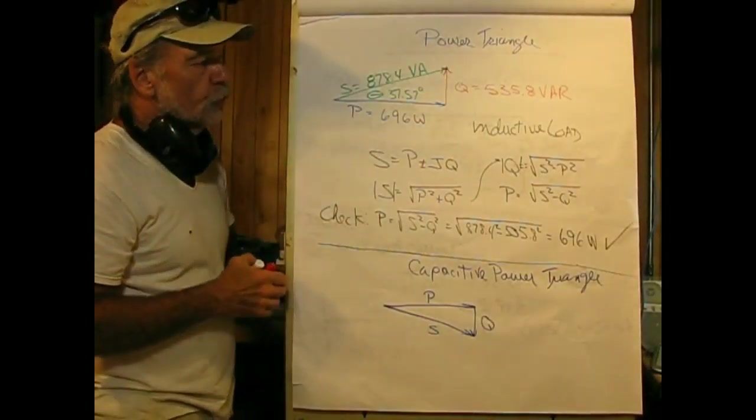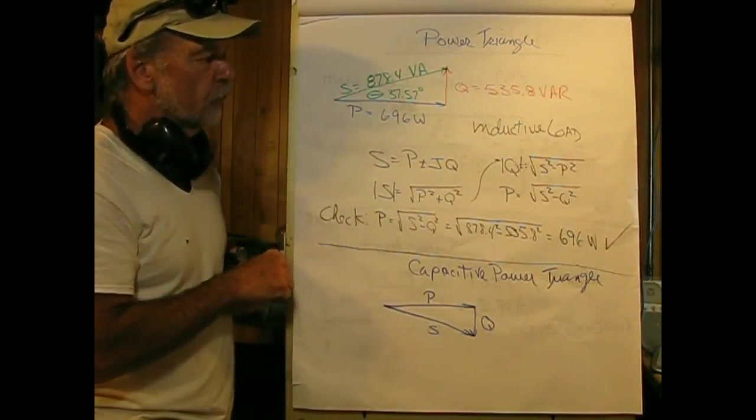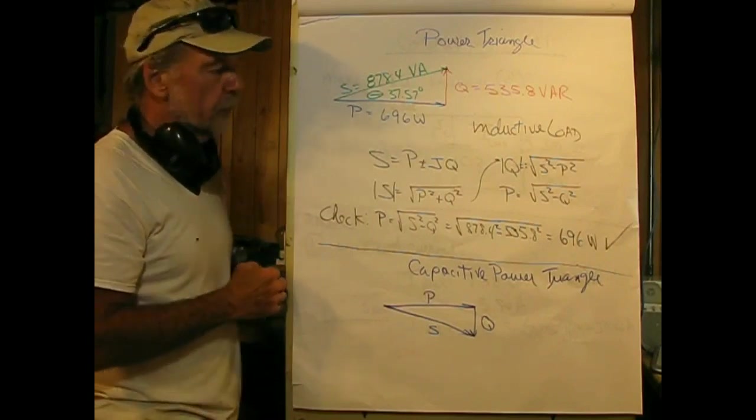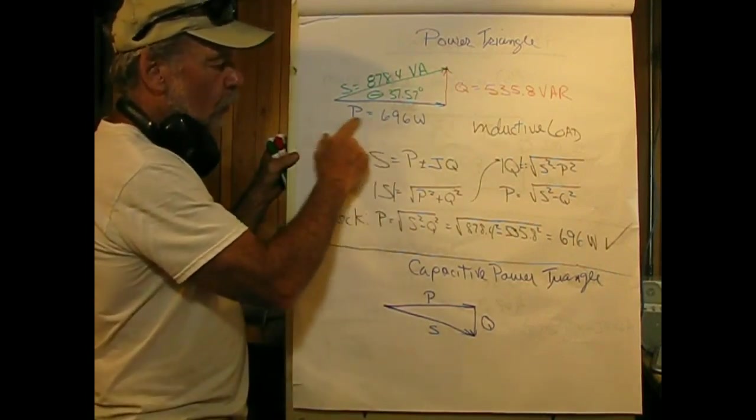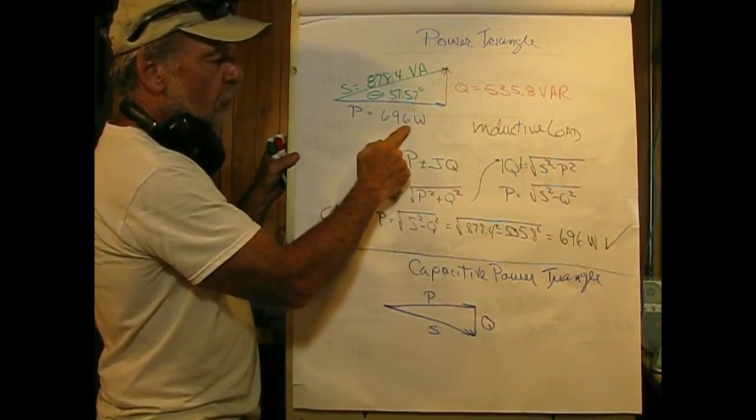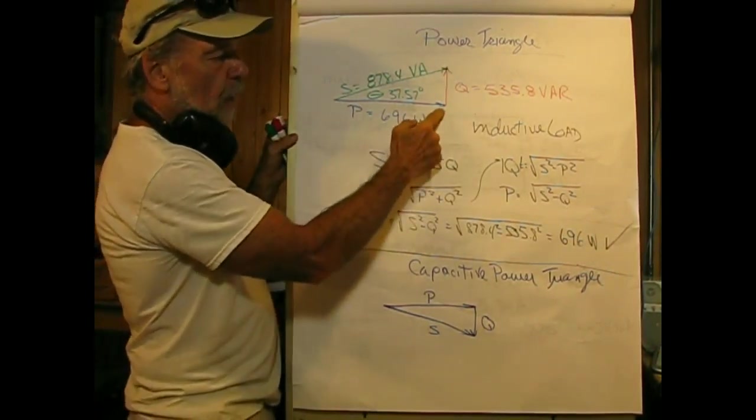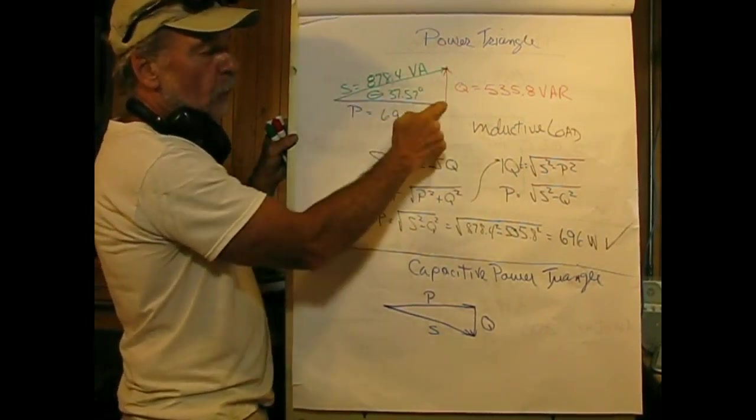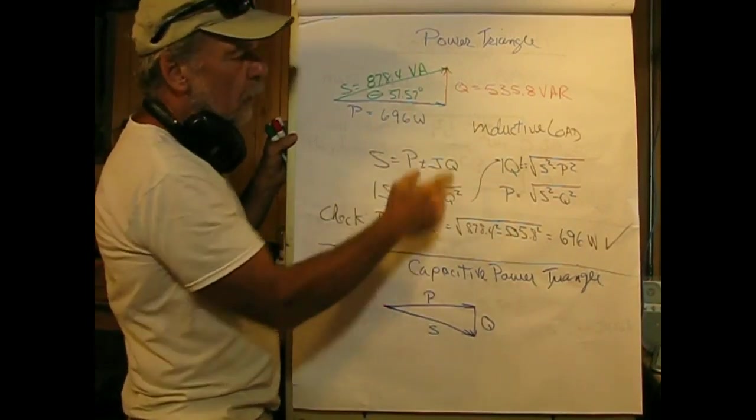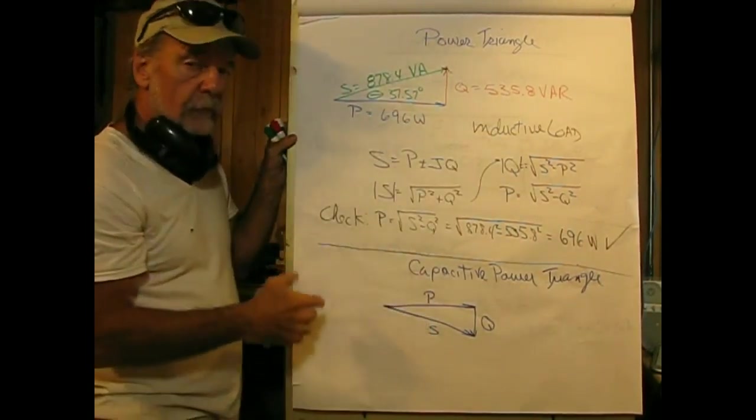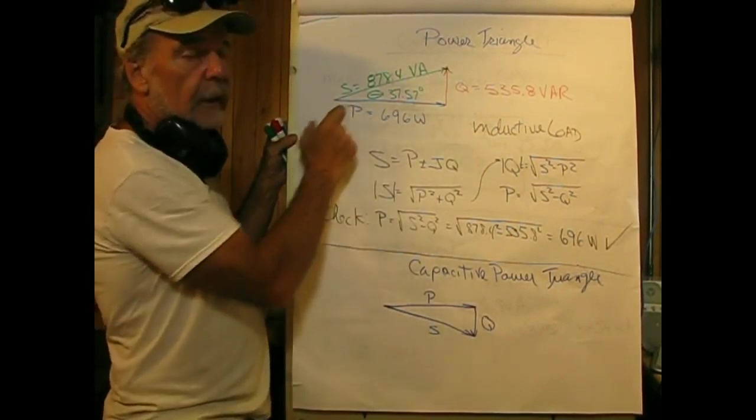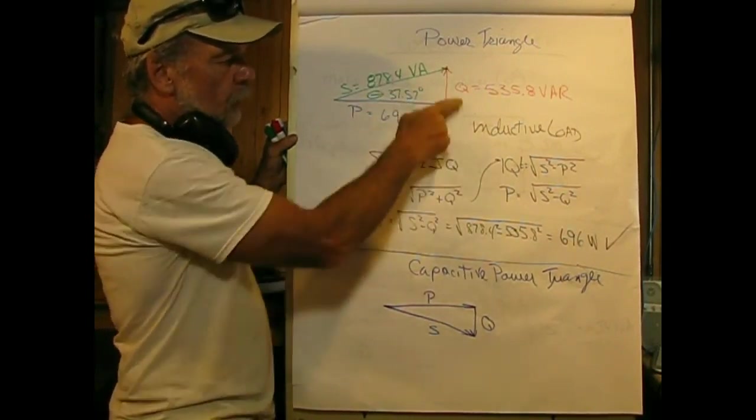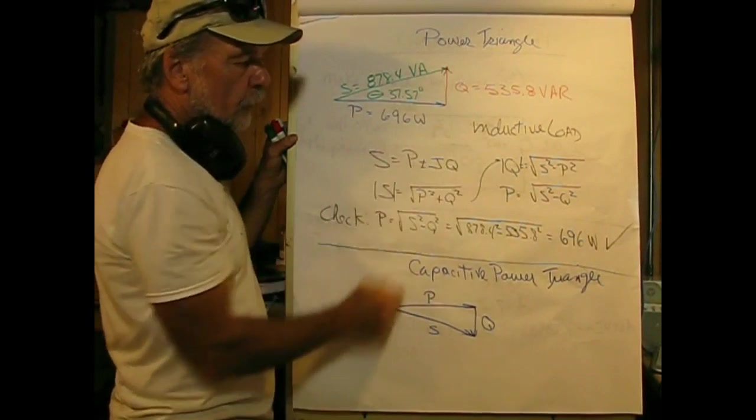I'm expressing this using a power triangle, very similar to an impedance diagram. It's right-angle trig. The real power we're going to let be on the real axis, that's 696 watts. For the reactive power, this is going up on the plus-J axis, which is really over here, but I drew it like this because I have to make a triangle, and that was our 535.8 VAR. Then the apparent power is the hypotenuse S, that's 878.4 VA.